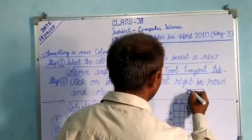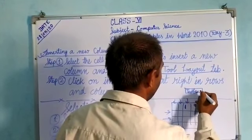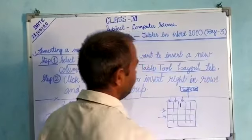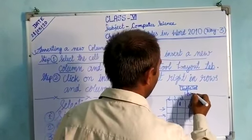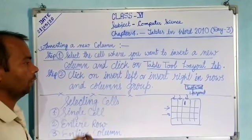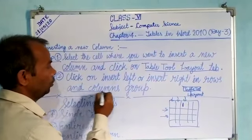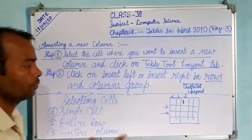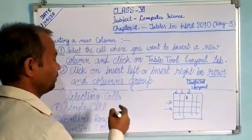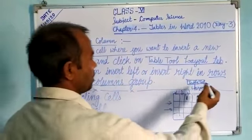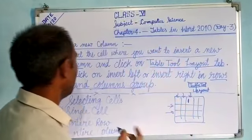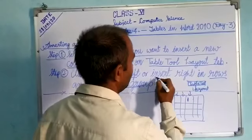In Table Tools, there is a Layout tab. When we click on the Layout tab, we get a group called the Rows and Columns group. So first, go to the Table Tools Layout tab, and in the Rows and Columns group, you will find the insert options.